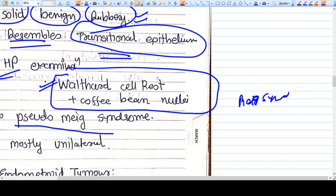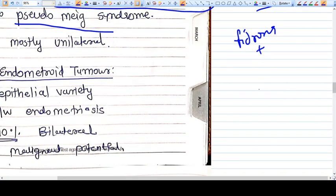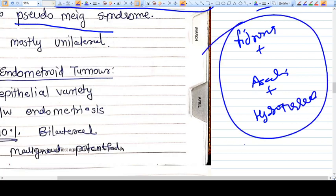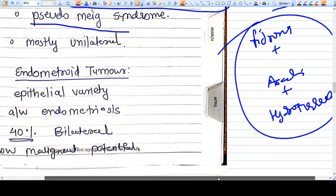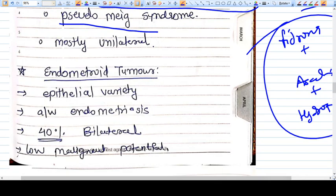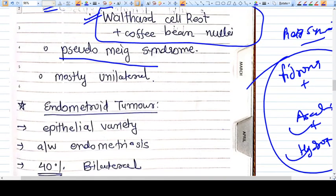Meigs syndrome is fibroma, ascites, and hydrothorax unilateral. This is called Meigs syndrome in fibromas, but here we'll see ascites and maybe some hydrothorax, so that's why it's called pseudo-Meigs syndrome. Brenner tumors are mostly unilateral.